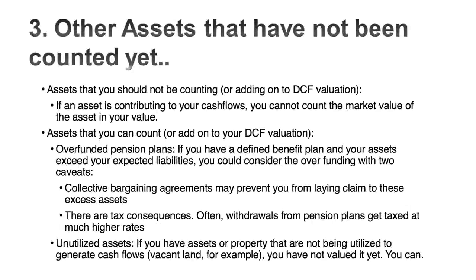After dealing with cash and cross holdings, the third step is to look for any other assets to bring into the mix. Critically, avoid double counting: any asset already generating the cash flows in your valuation should not be added again. Don't add the physical value of a factory or headquarters building if you've already counted the cash flows from operating them. You're looking for truly unutilized assets not yet counted — rare but they exist. Overfunded pension obligations, where assets exceed liabilities, may also qualify, though claiming that overfunding can be tricky.